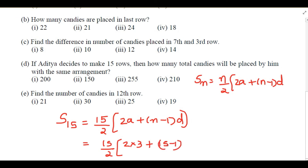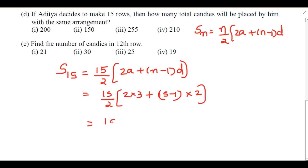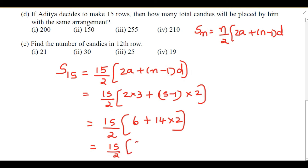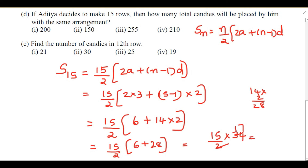So S₁₅ = 15/2 × (6 + 14×2) = 15/2 × (6 + 28) = 15/2 × 34. Simplifying: 15 × 17 = 255 candies. So 255 candies will be placed by Aditya in 15 rows.